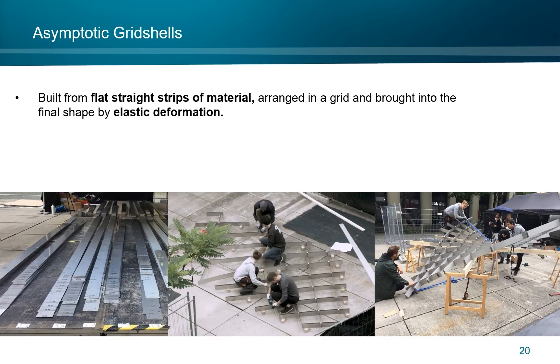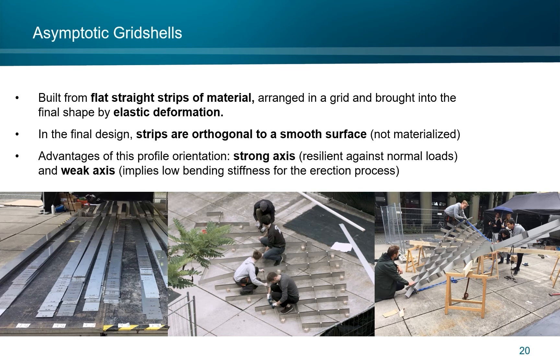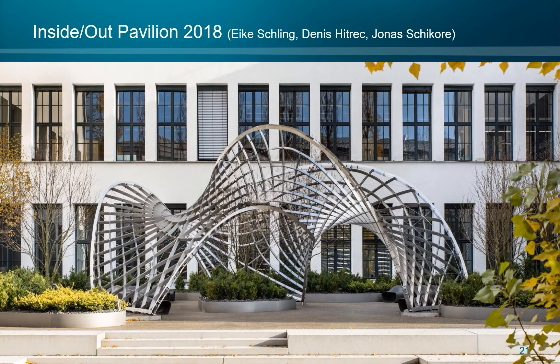Let us now move to the second type of structures, namely asymptotic grid shells. They are built from flat, straight strips of material arranged in a grid and brought into the final shape by elastic deformation. In the final design, strips are orthogonal to a smooth surface, which is not materialized. The advantages of this profile orientation is that a strong axis is placed so that the structure is resilient against normal loads, and a weak axis implies low bending stiffness for the erection process. Here's an example in front of a building at the Technical University of Munich.